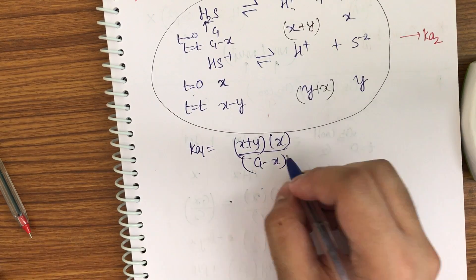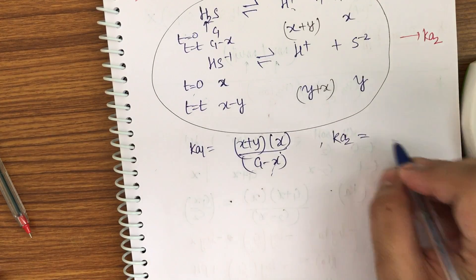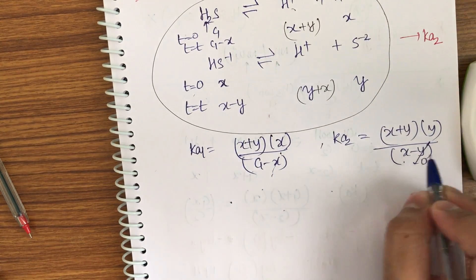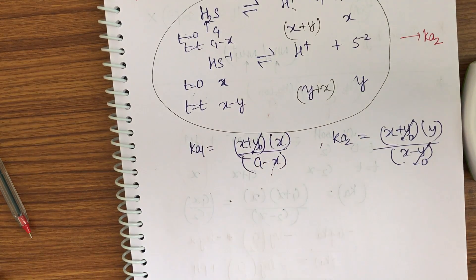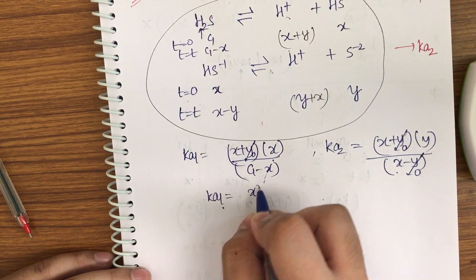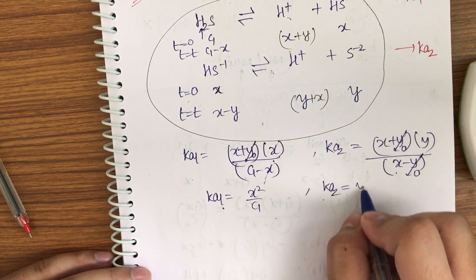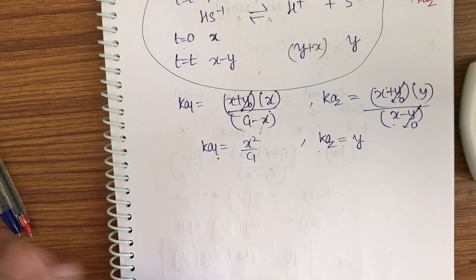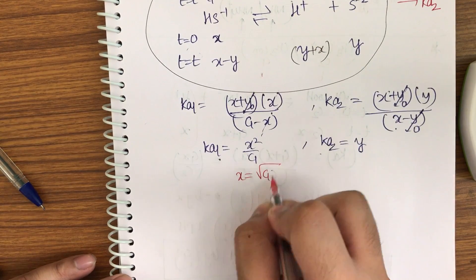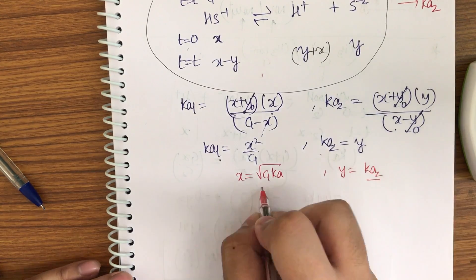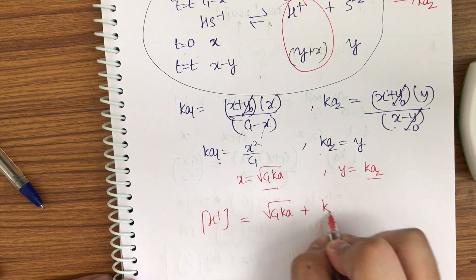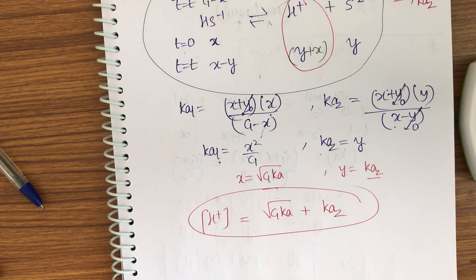Applying approximations: ignore x in (C₁ − x) and ignore y wherever it appears with x. Then Ka₁ ≈ x² / C₁, giving x = √(C₁·Ka₁). And Ka₂ ≈ y, so y = Ka₂. The net [H⁺] = x + y = √(C₁·Ka₁) + Ka₂. Taking −log gives the pH of the solution.